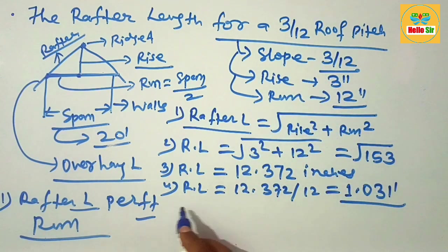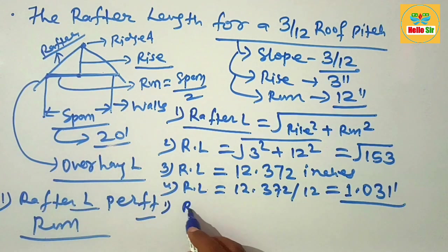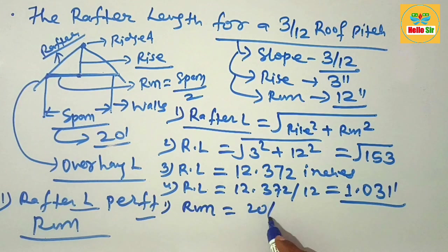If your span is 20 feet, then the run will be 20 divided by 2, which is 10 feet.